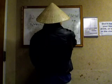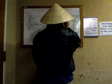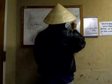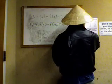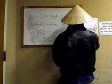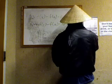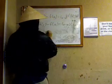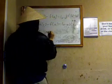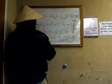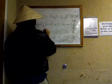Applying Rolle's Theorem at x = c: f(c) minus f(a) minus (c minus a) times [f(b) minus f(a)] over (b minus a) equals zero — because Rolle's Theorem says the derivative equals zero at c.